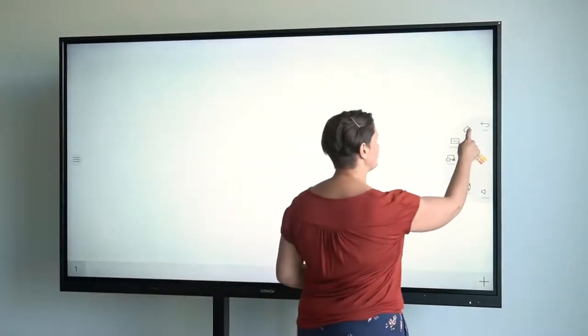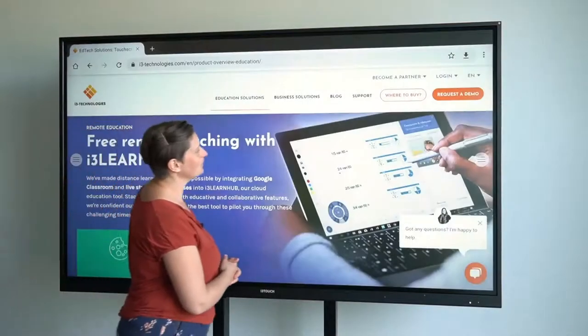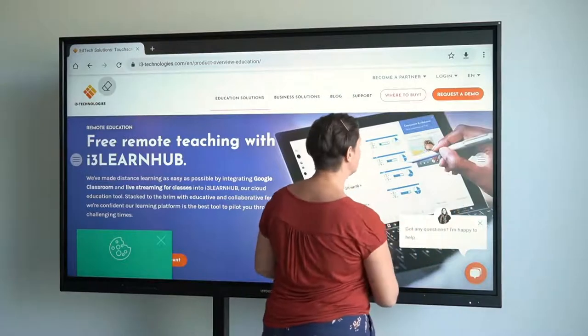Let's take a side step to our annotate feature, because it has a link with the whiteboard. I'm going to go to a browser. So I open a browser, and through the hamburger menu, I activate the annotate tool.